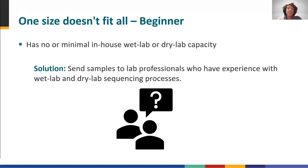A beginner lab is one that never or rarely uses sequencing for surveillance or outbreak investigation. This lab probably doesn't have sufficient in-house capacity to handle both the wet lab and dry lab components. There may be a single person performing both sequencing and analytics, or perhaps only sequencing library preparation can be handled on site. Some U.S. public health laboratories submit samples to a collaborator for sequencing — an appropriate way to address capacity issues.